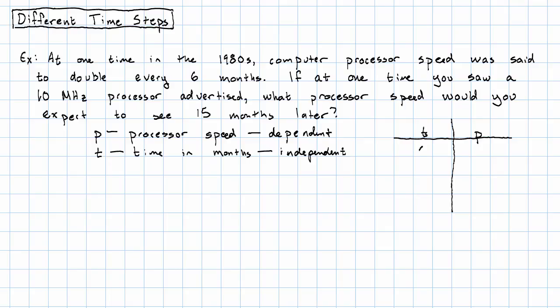So right now, you see a 10 megahertz processor advertised. Six months pass, and you expect that to double. Another six months pass, and you expect that to double again. And another six months pass, and you expect that to double again.